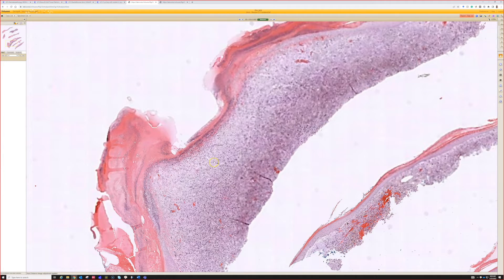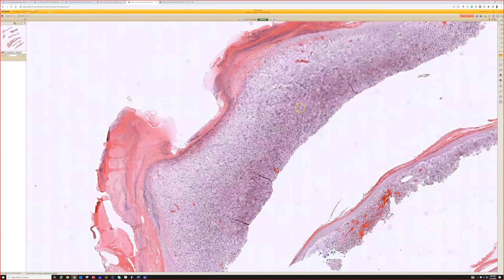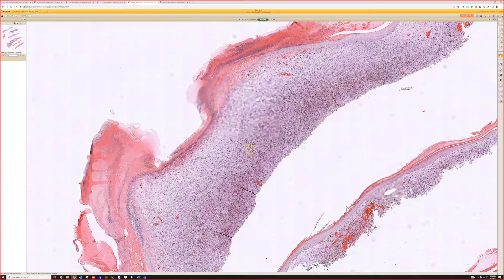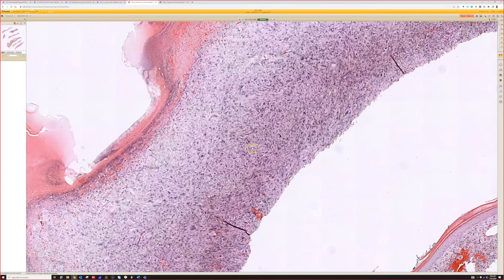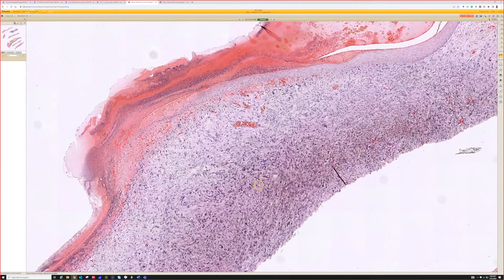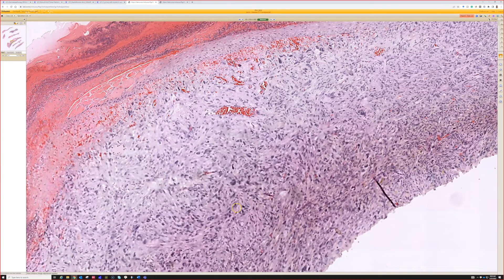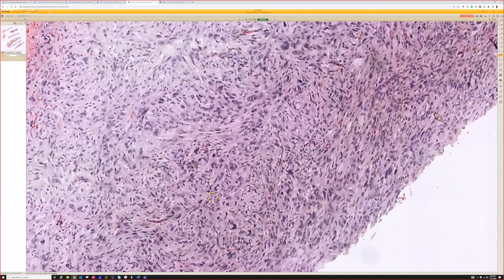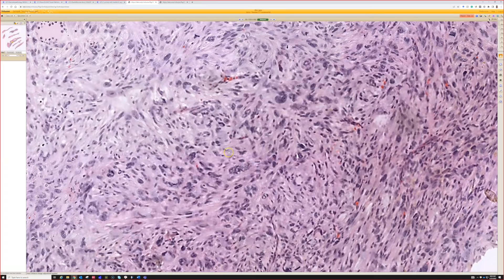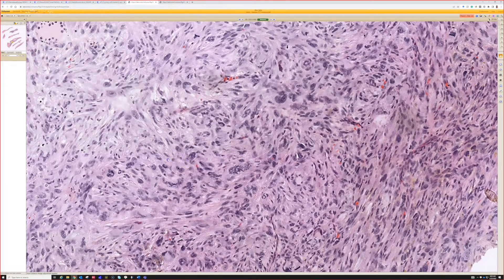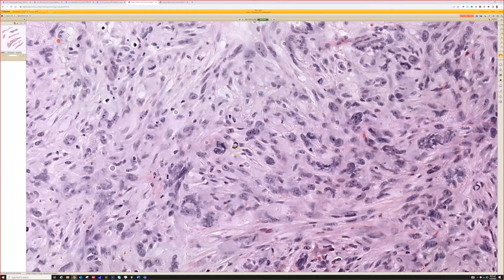But then we see a lot of very hypercellular population in the dermis that consists of very pleomorphic spindle-shaped cells. And I saw a lot of pleomorphism. And I saw mitosis also.